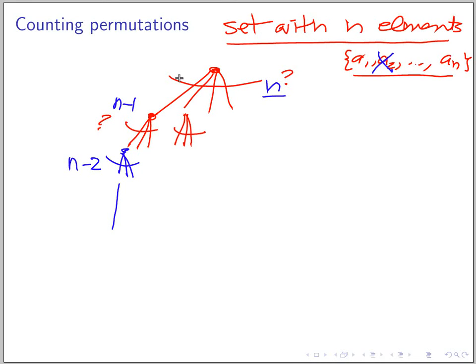So how many steps do we have? We have n steps, right, because we need to pick n elements. And the first step we have n choices, the second step you have n minus 1 choices, the third step you have n minus 2, and so on.